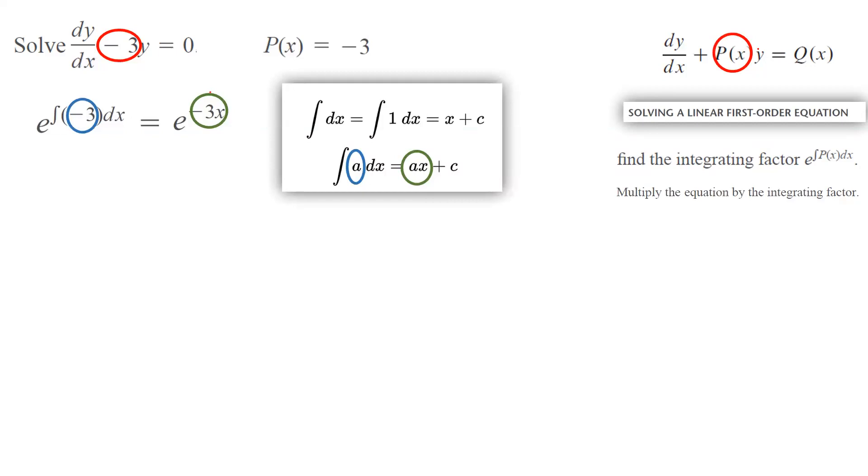In the next step, you're going to multiply the equation by the integrating factor. So the equation dy/dx minus 3y equals 0, multiply by e to the power negative 3x. You have one term, a second term on the left-hand side, and then a term on the right-hand side which is 0.